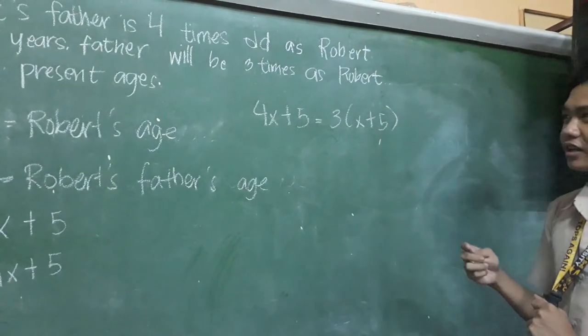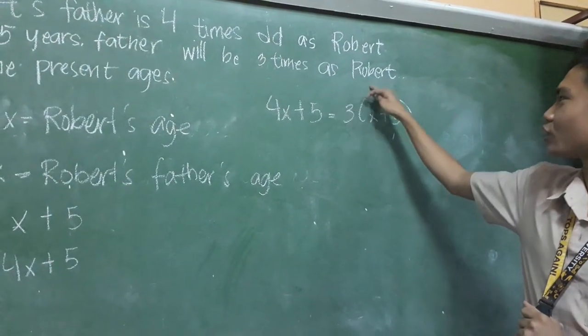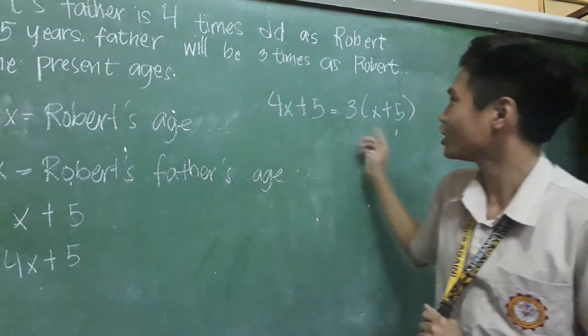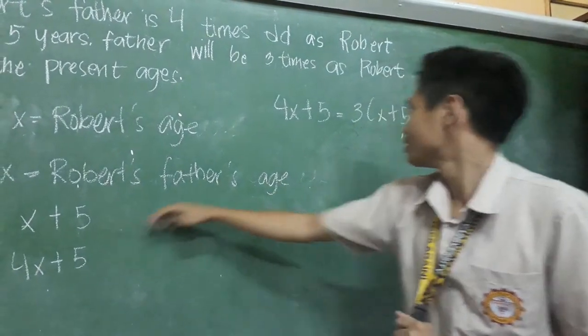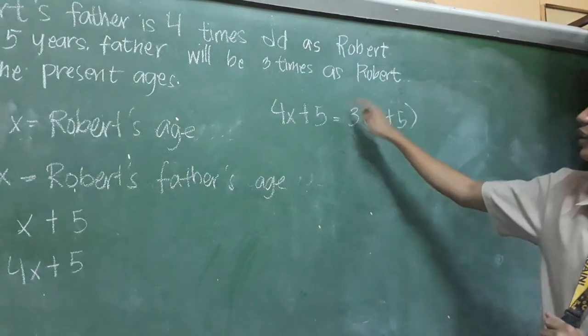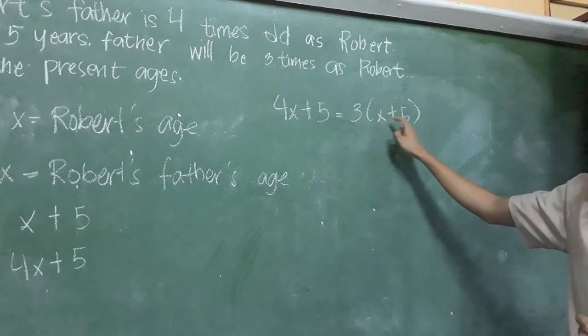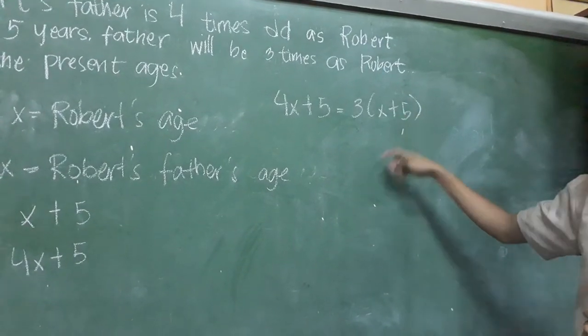Now, why? We get three times as Robert because we get Robert's age in five years, and three times Robert's age is 3X plus 5, giving us 3(X plus 5).